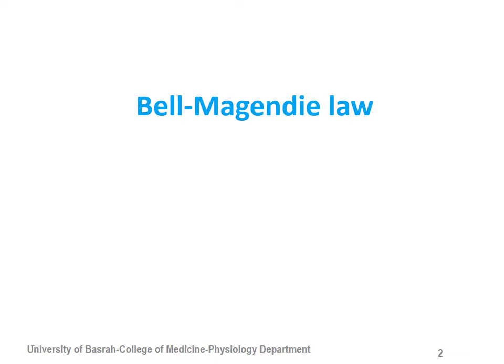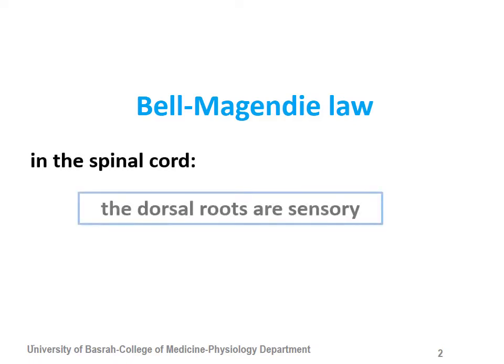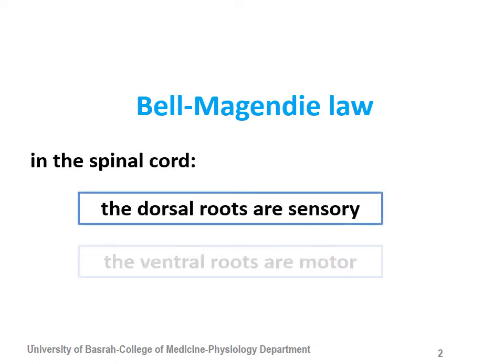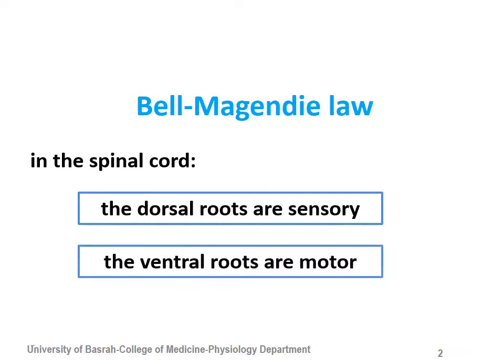There is what's called the Bell-Magendie Law. What is in the dorsal or posterior root is considered as sensory — this is in the spinal cord. What is in the ventral root is considered as pure motor. The ventral aspect, the ventral root, is only the motor integrating part of the spinal cord.